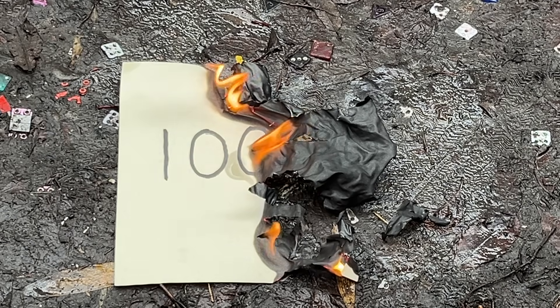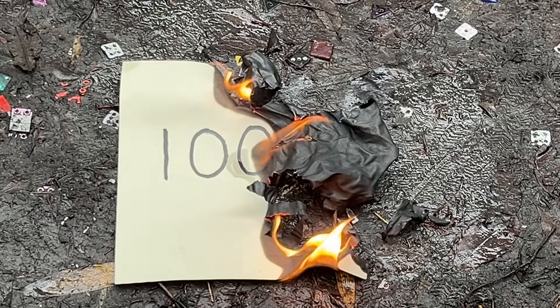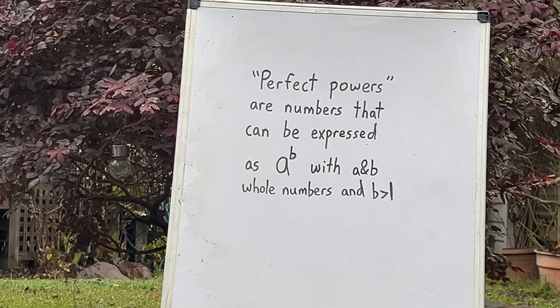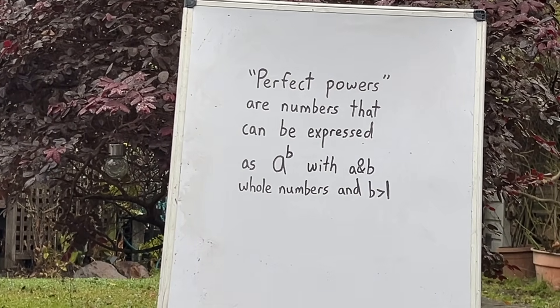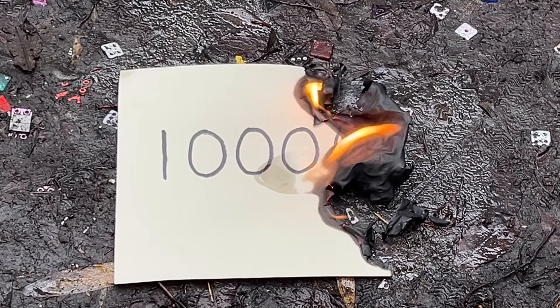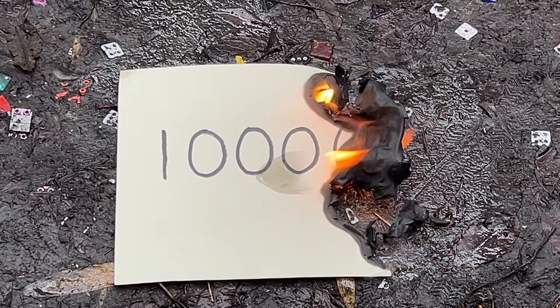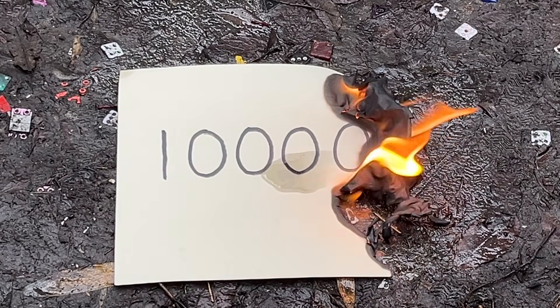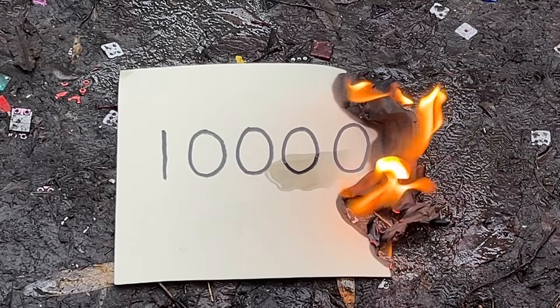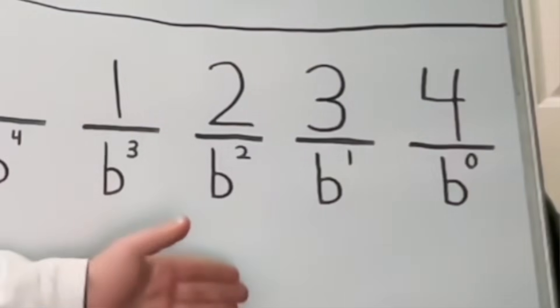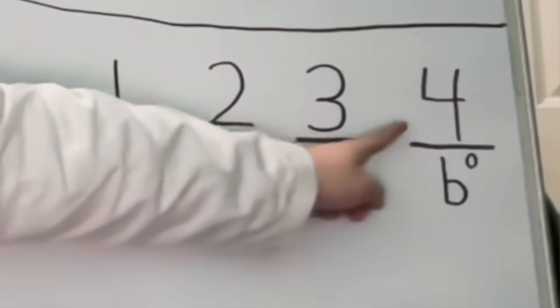Similar to how 'one zero' could represent any of these basic base numbers, digit strings composed of a one followed by more than one zero essentially represent what are called perfect powers. Perfect powers are numbers that can be expressed as some whole number to the power of another whole number, with the exponent being larger than one. In base 10, such digit strings represent powers of 10 beyond the first power, and across all basic bases, they represent perfect powers larger than one.